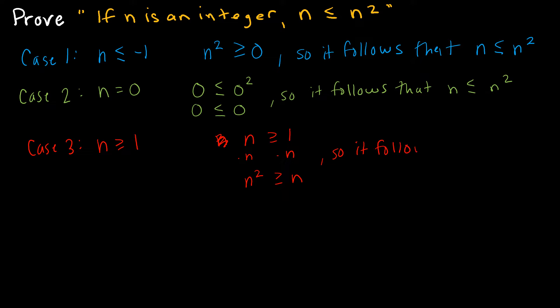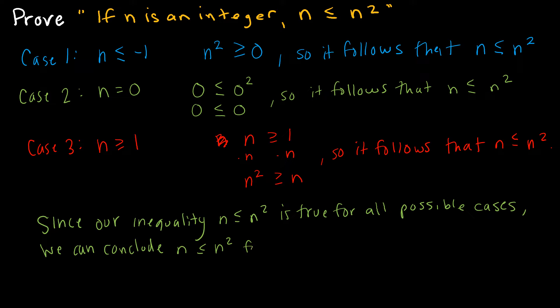This is equivalent to n is less than or equal to n squared. So it follows that n is less than or equal to n squared. Since our inequality n is less than or equal to n squared is true for all possible cases, we can conclude that n is less than or equal to n squared for all integers. And there we go.